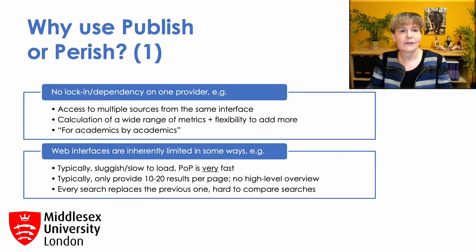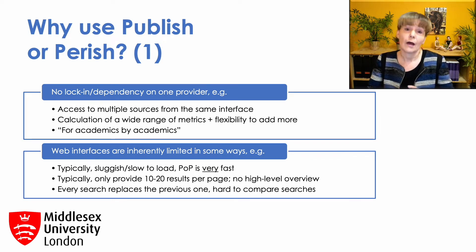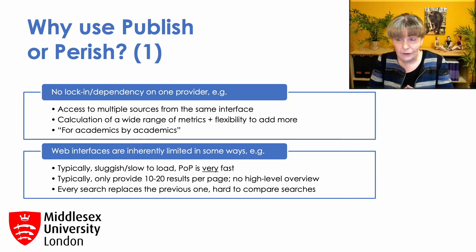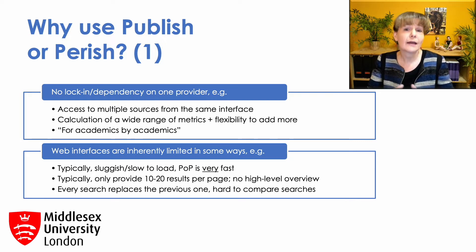Web interfaces usually only provide 10 or at most 20 results per page. That means that if you're searching for an academic with hundreds of publications, or if you're doing a literature review where you get hundreds of results, you have to tediously click through page by page by page, making it extremely hard to get a clear overview of your results.